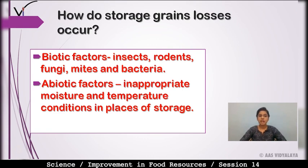Along with that, abiotic factors mein inappropriate moisture and temperature conditions hain — storage ke place pe available hain. Toh bhi grains ko loss hota hai. Biotic factors aur abiotic factors dono hi grains ke loss ko affect karte hain. Biotic mein insects, bacteria, rodents, fungi; abiotic mein moisture aur temperature ki inappropriate conditions ki wajah se grains mein loss hota hai.